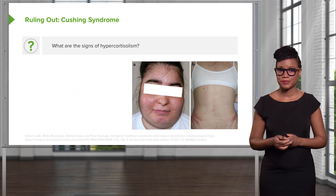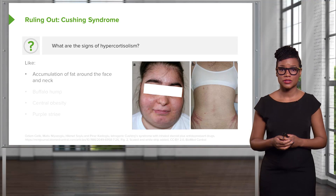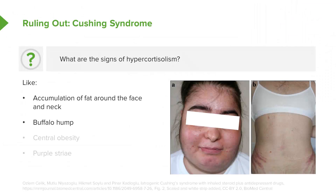Let's rule out Cushing syndrome. What are the signs of elevated cortisol in a patient who presents with hirsutism? They may have fat accumulation around the face and neck. They may have a buffalo hump, but this can also be seen in just an obese patient. They typically have central obesity, meaning obesity around the abdomen and belly. One distinguishing feature is purple striae — these are not normal stretch marks. As you can see in panel B, this patient has purple striae, which appear purple as opposed to dark like normal stretch marks.